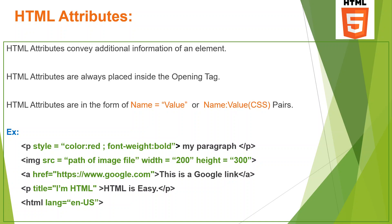If you want to convey more information to the browser — for example, display my text in italic format in the color blue — that functionality you want apart from the basic paragraph functionality. In such cases, you specify attributes. HTML attributes convey additional information of an element.